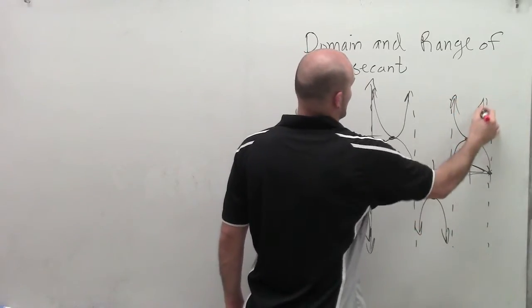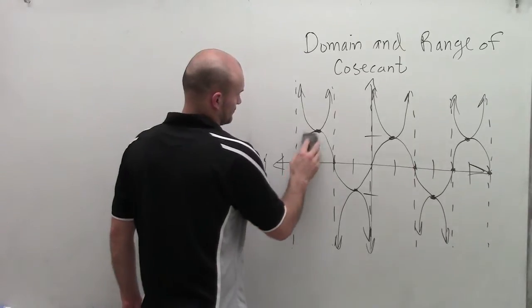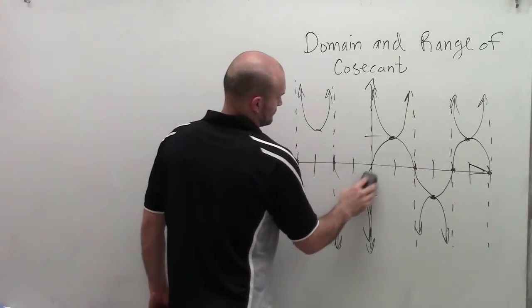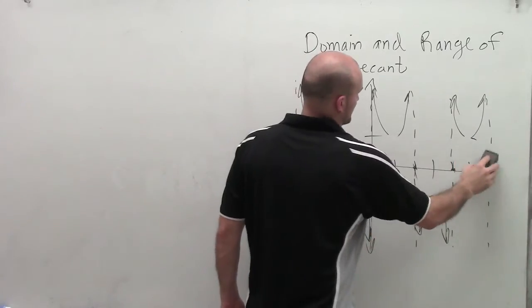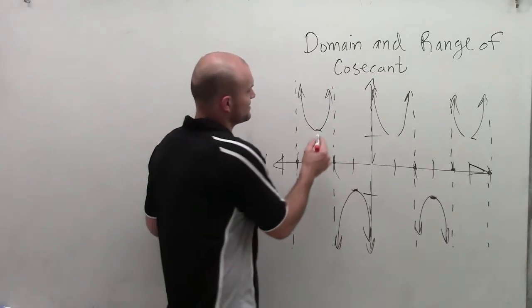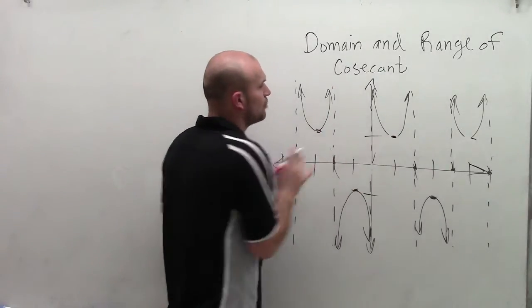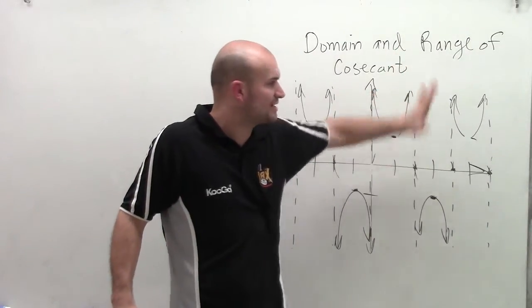Then, once I have that kind of graphed, I can now erase my sine function. So now, here's the graph that I'm looking at. This is the cosecant graph. And what we notice is this cosecant graph approaches these asymptotes, but it cannot be evaluated at each one of these asymptotes.